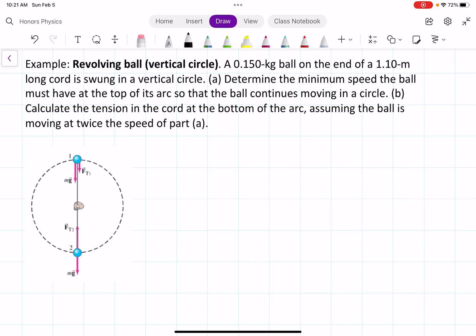At the top, the ball has both gravity and tension in the same direction as the acceleration towards the center of the circle. While at the bottom, the force of tension is in the same direction as the acceleration, but the gravity is in the opposite.